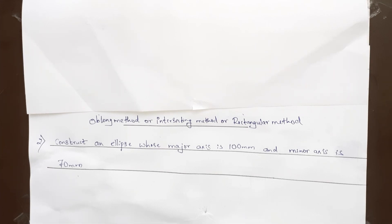Whenever in the problem they give major axis and minor axis, we have to use the rectangular method or intersection method or oblong method to solve the ellipse.